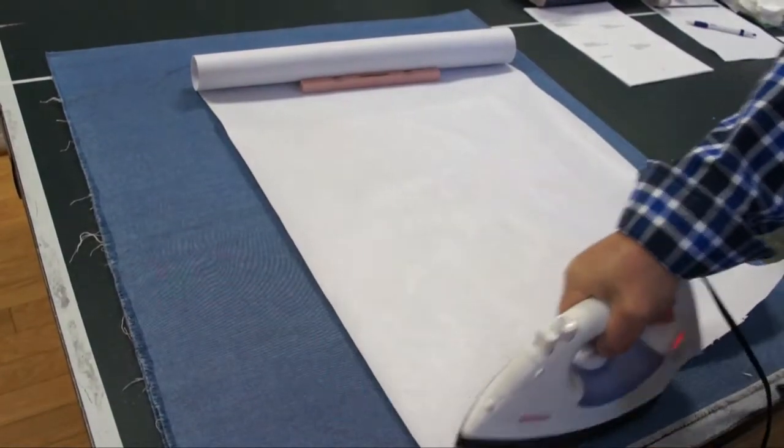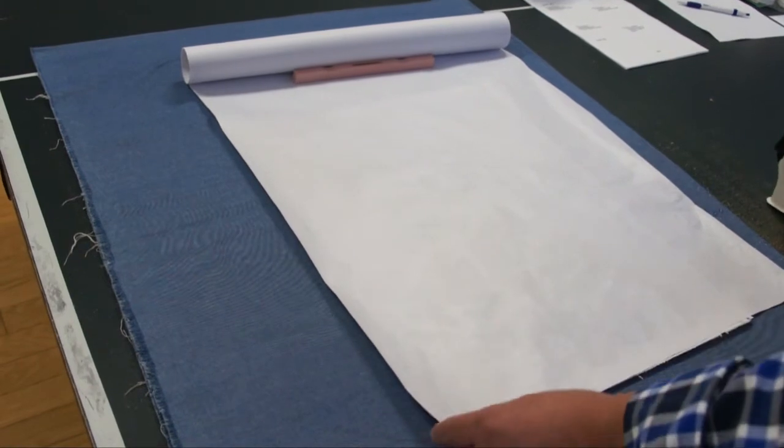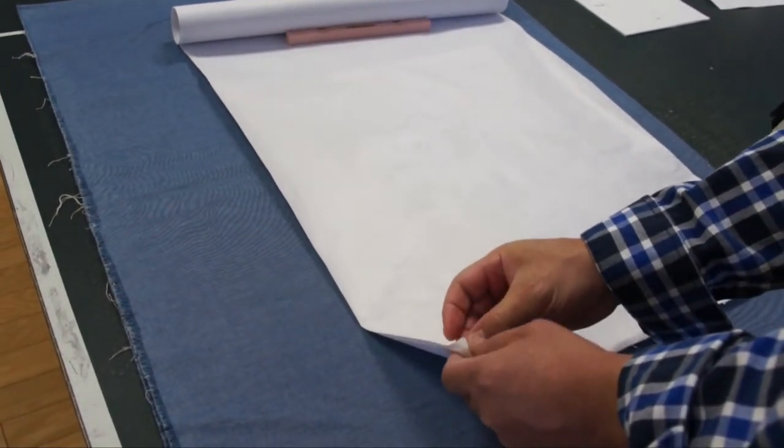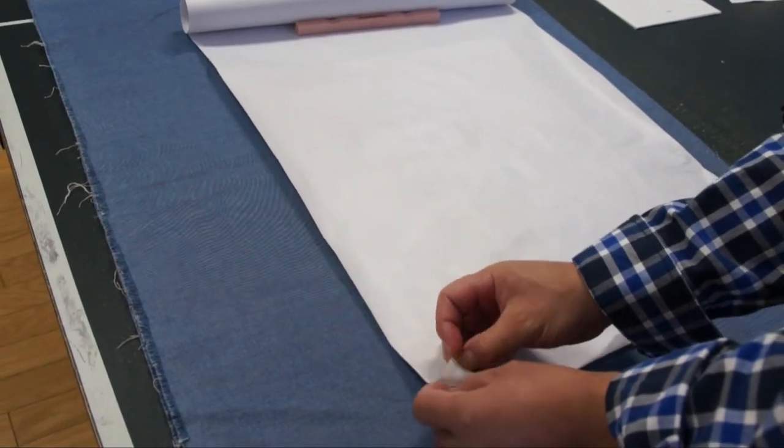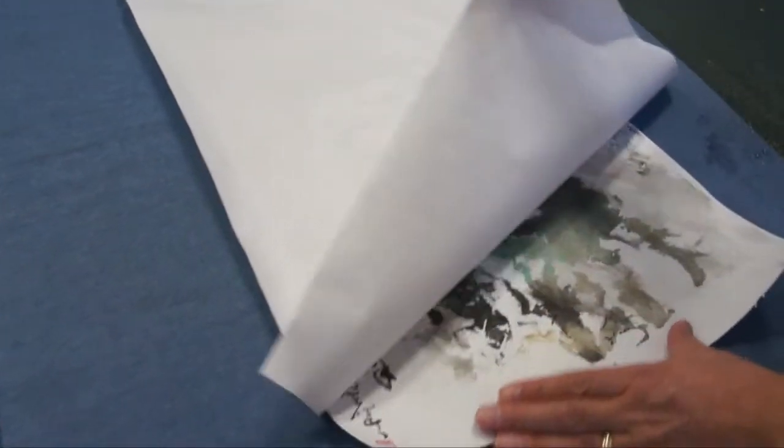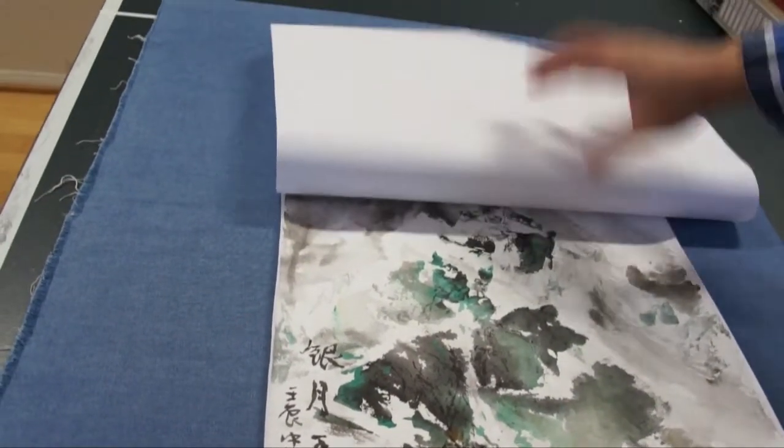In many cases, the wrinkle could be eliminated by just keeping ironing. Because it may just not be enough. You see, now it's ninety percent done, I think.